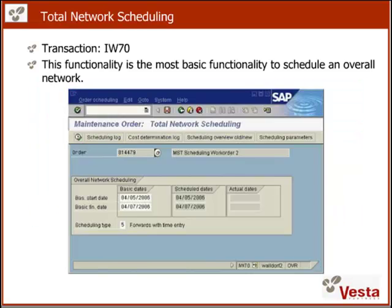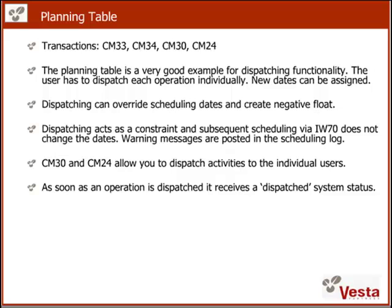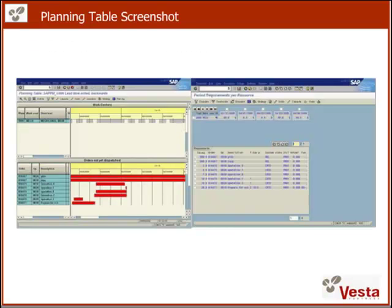Another option in SAP is the Gantt chart view, which shows your work order operations in a classic Gantt chart layout. You cannot make modifications to operations in this screen — it is purely for visualization purposes. The next scheduling option is available in transaction IW-70. It allows you to schedule a network or a complete set of work orders taking relationships and constraints into account. The planning tables in SAP come in multiple variations and allow you to dispatch work centers — usually groups of people with the same skill — or individuals. In comparison to scheduling, dispatching is a manual assignment of work to a resource for a specific time. You have the choice between a graphical view or a tabular view.